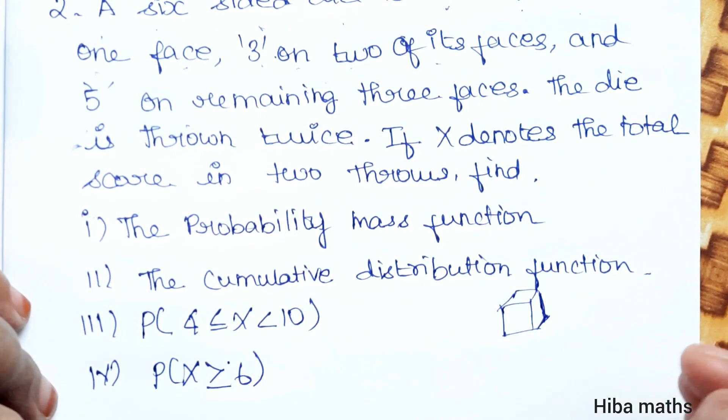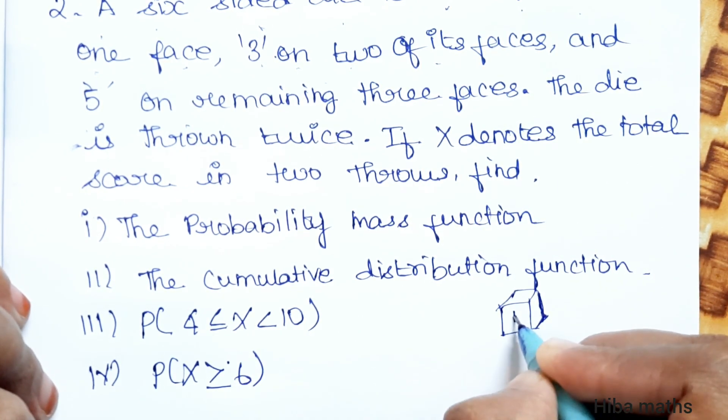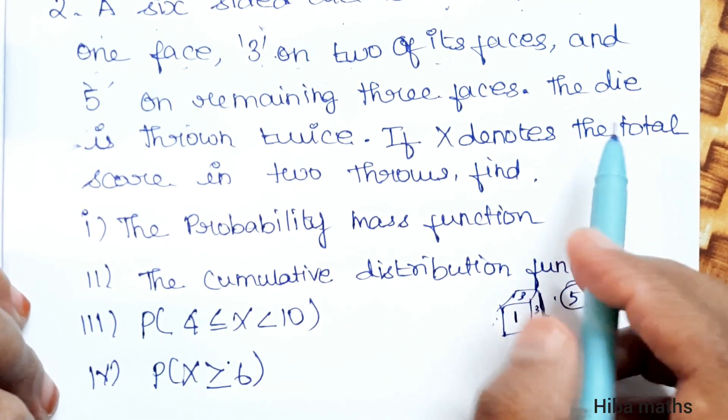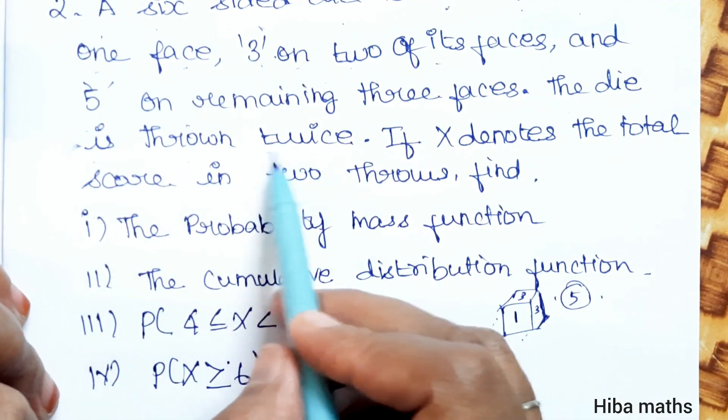One, two, three, four, five, six are the numbers. But what we have said is that there is one face marked one, three faces marked three. Balance is marked one face, three faces, five five five. The die is thrown twice, so the die is thrown twice.